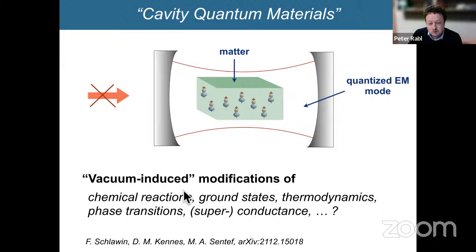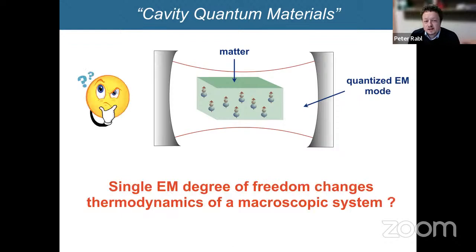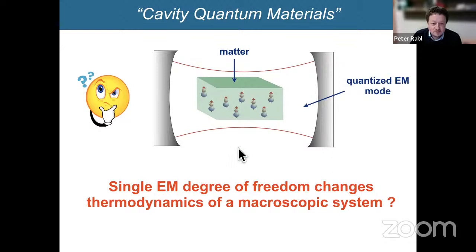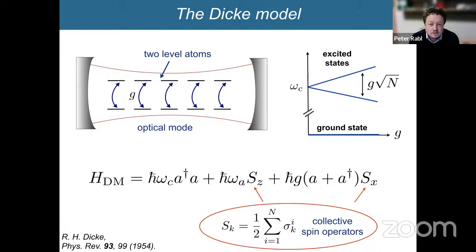This question of vacuum-induced modifications of matter sounds very exciting, but you might also ask: if there's really a big effect, why don't we see it in many experiments? From a fundamental perspective, if I couple many electrons and many dipoles to a single cavity mode, is it actually possible thermodynamically to influence a macroscopic system by adding just a single degree of freedom like a single cavity mode? So there's a lot of excitement in this field, but also a lot of concerns. This is actually not a new topic — its origins go back 50 years, first discussed in the context of the so-called Dicke model.